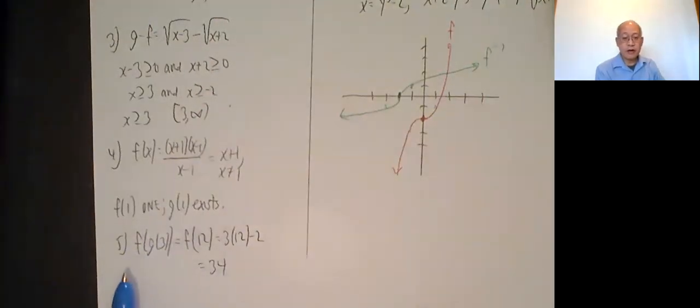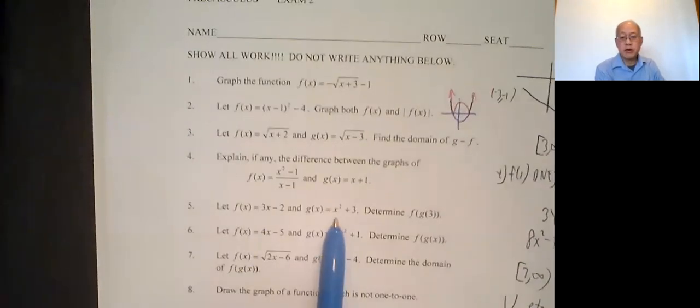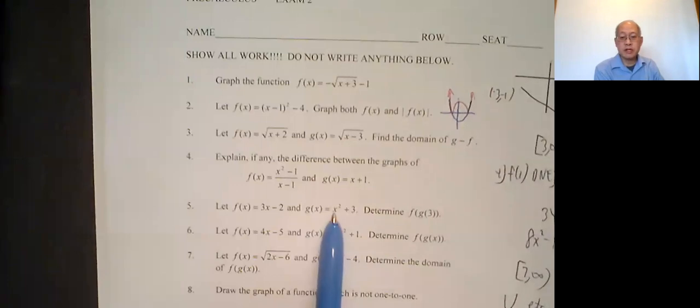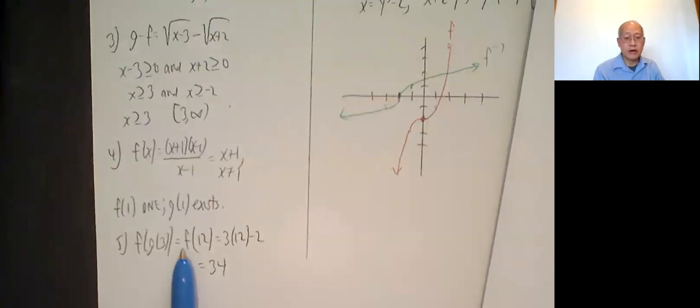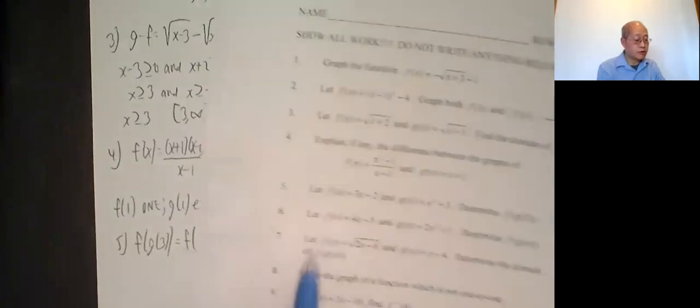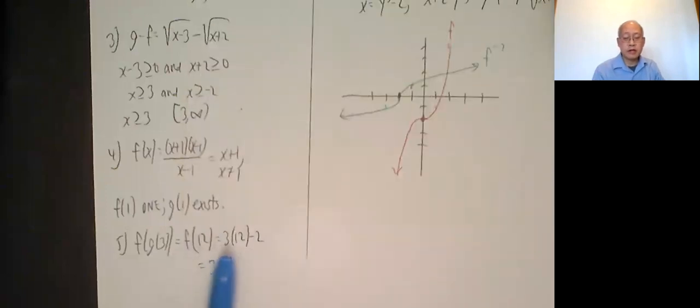Okay, question 5 asks for f of g of 3. So that means first you do g of 3. So g of 3, put a 3 right here. 3 squared is 9, 9 plus 3 is 12. All right, so that means you're now doing f of 12. So 12 goes into the f function right there. 3 times 12 minus 2, 36 minus 2, which is 34.